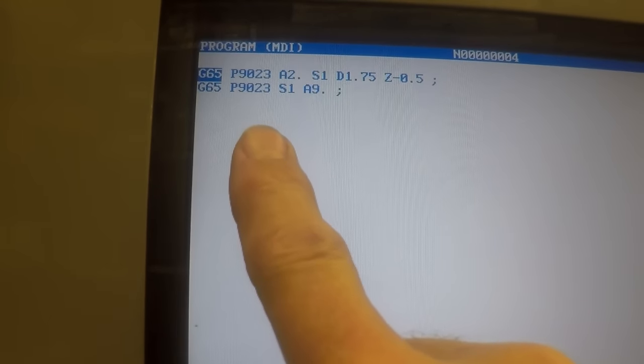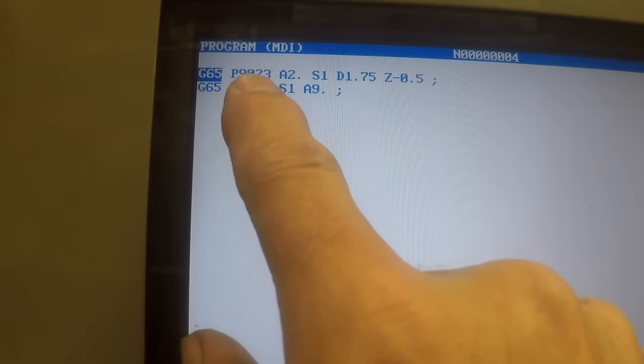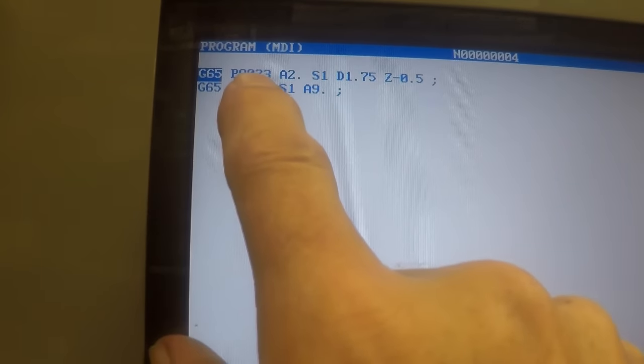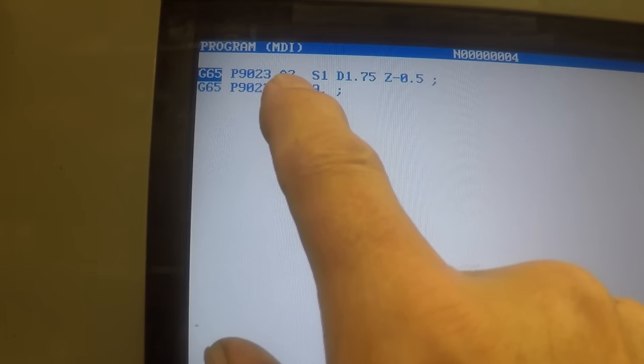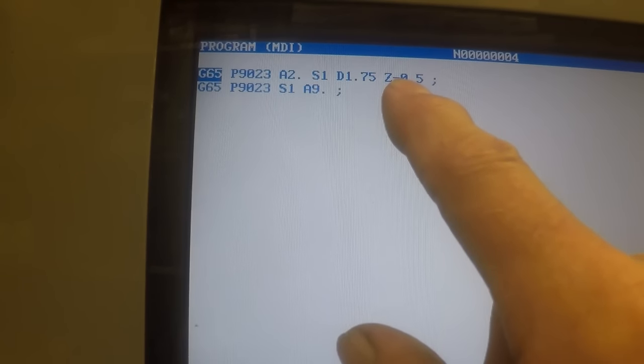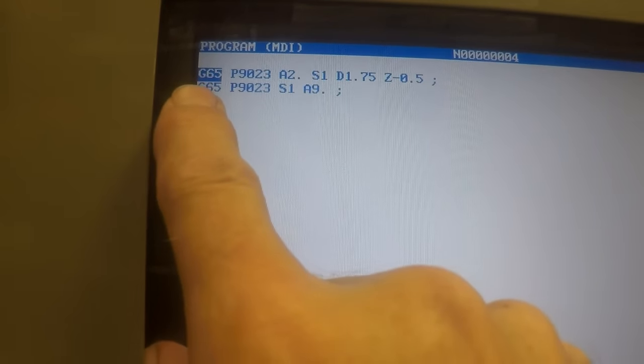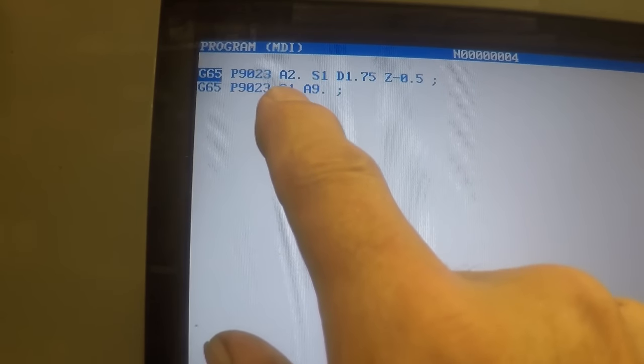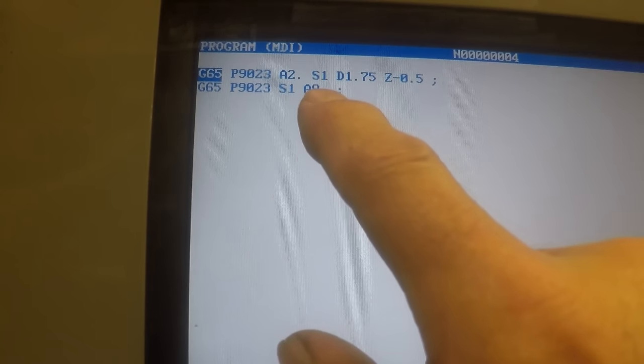Let me show you the little macros up here if you can see them. These are the Renishaw cycles. This one here for doing the OD, so G65 P9023 is calling up the program, the macro. This is calling the Renishaw macro, and this is the program 9023, which is Renishaw's easy set cycles. A2 is measuring the OD of a round boss. S1 is the fixture offset. D1.75 is the diameter of the stock, and Z, it's going to come down an incremental distance from where the probe's sitting, a half inch minus 0.5 in Z, and it's going to touch the sides of the part just like you saw in the video earlier. And then this G65 is calling for another macro, 9023, Renishaw's easy set program again. S1 is the fixture offset, first fixture offset G54, and A9 is measuring straight down in Z to set the Z offset.